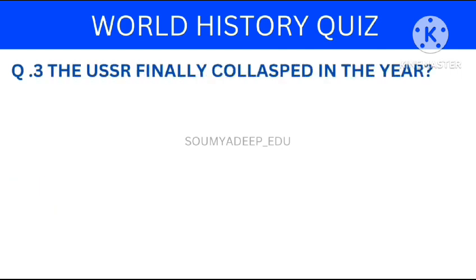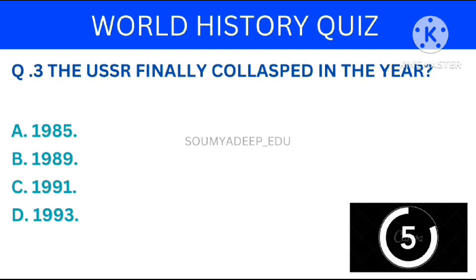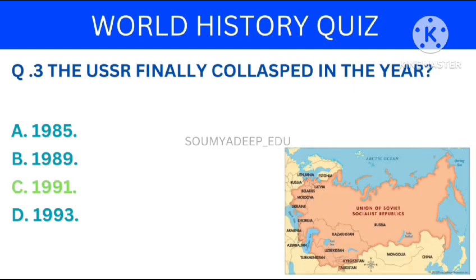So let's move to the next question. The USSR finally collapsed in the year. The options are: 1985, 1989, 1991, 1993. Your time starts now. The answer is 1991.